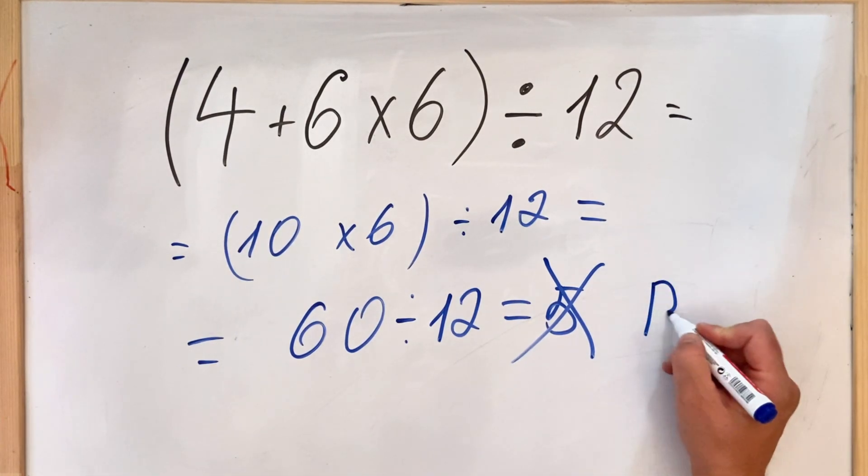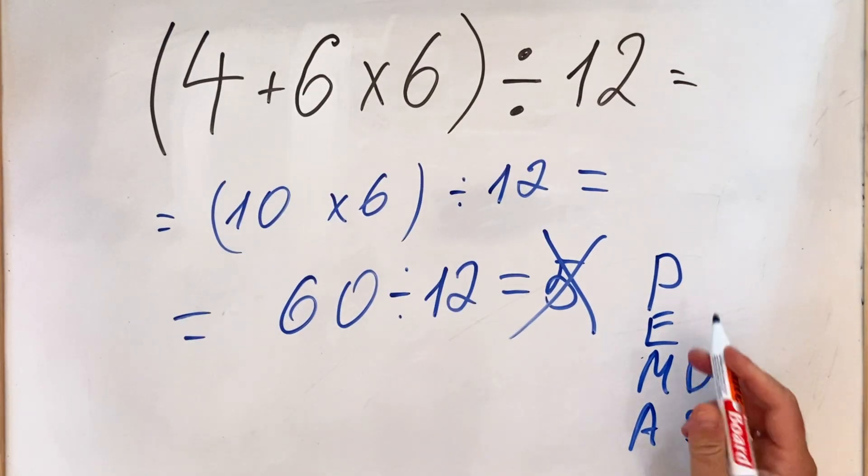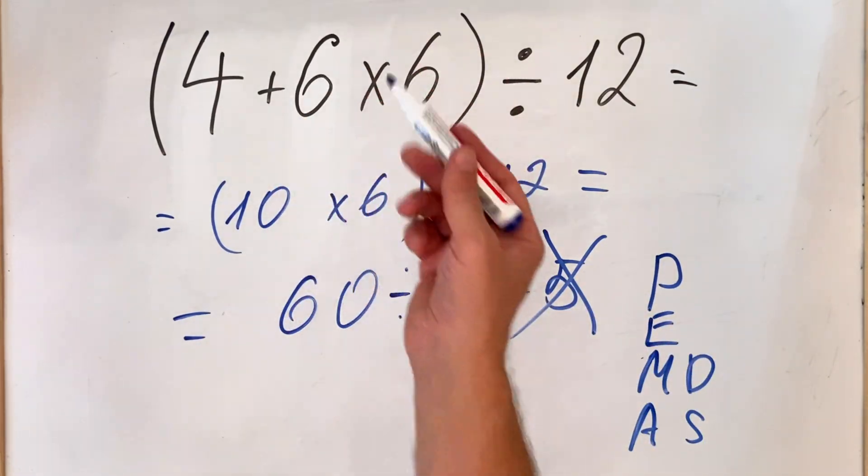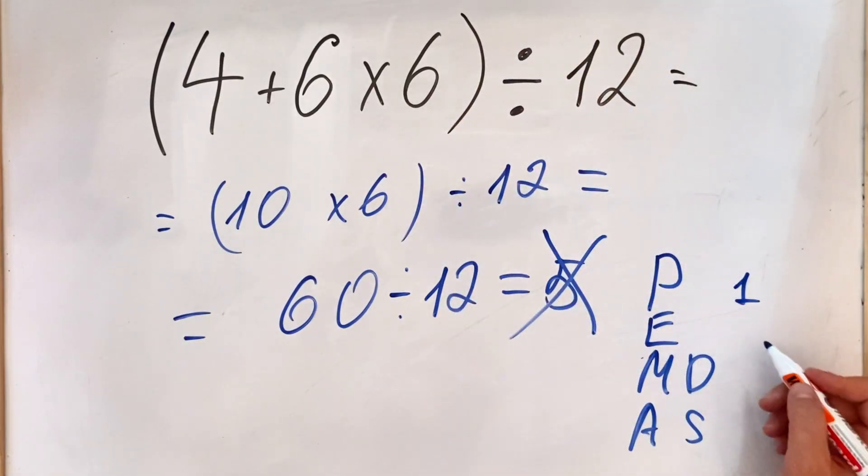Because as you all remember we have the order of operation rules which is PEMDAS where P stands for parentheses so we need to do what's inside first, then we need to do exponents if you have it, in this case we don't have it, then if we have multiplication and division we need to do it equally from left to right.